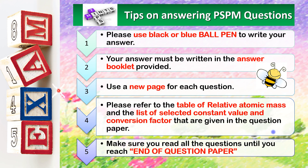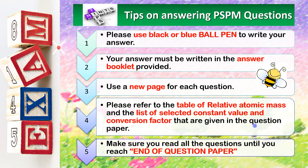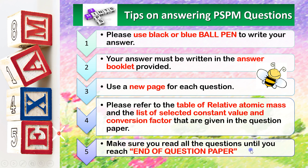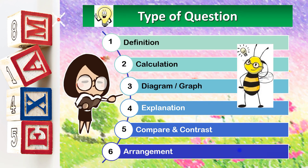Your answer must be written in the answer booklet provided. Use a new page for each question. Please refer to the table of relative atomic mass and the list of selected constant values and conversion factors that are given in the question paper. Make sure you read all the questions until you reach the end of the question paper.